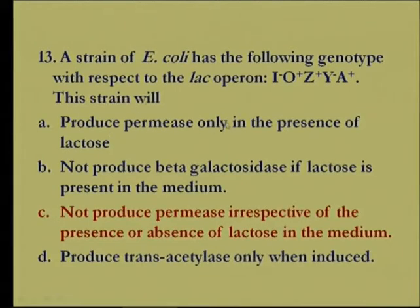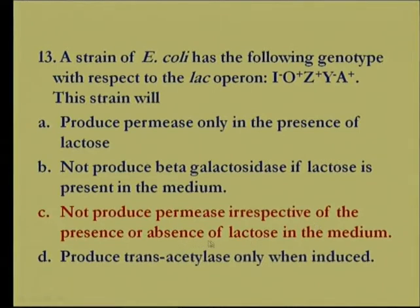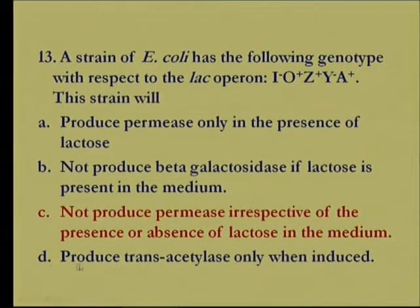Option A — the strain will produce permease only in the presence of lactose — is incorrect. Option B — will not produce beta-galactosidase if lactose is present — is also incorrect. Option C — beta-galactosidase will be produced but permease will not be produced irrespective of the presence or absence of lactose — is correct, because the lac y gene encoding beta-galactoside permease is mutated and non-functional. Option D — will produce transacetylase only when induced — is incorrect. The correct option is C.